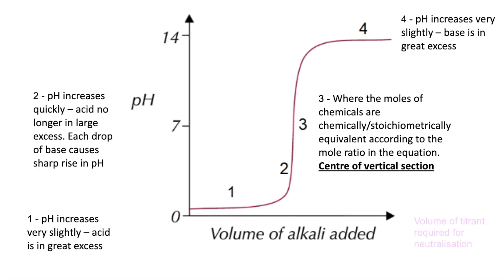The key part of the curve is the vertical section. You can see that pink dotted line now, where that hits the x-axis is telling you the volume of alkali in this case, or the volume of the substance in the burette required for neutralisation.